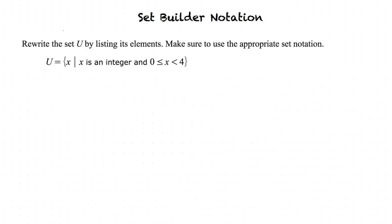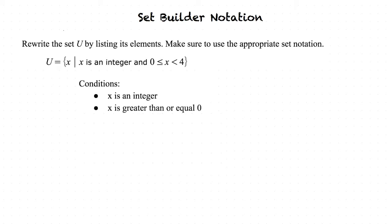What are the three conditions? The three conditions are: x is an integer, x is greater than or equal to 0, and x is less than 4. The only numbers that could possibly satisfy these conditions are 0, 1, 2, and 3.